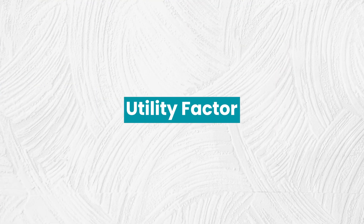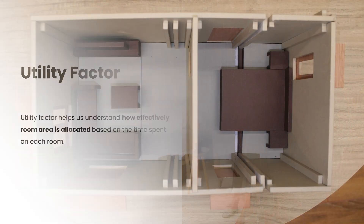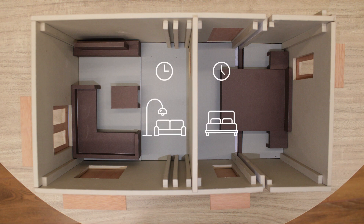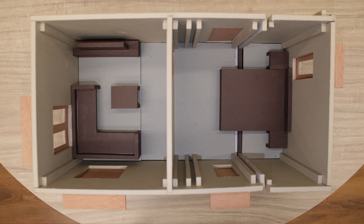The next factor used is called the utility factor, which is used to understand how effectively an area is allocated based on the time spent in each room. For example, consider a scenario where one wishes to spend more time in the bedroom than in the living room. While designing, if more area is allocated for the living room than for bedrooms, it reduces the impact of space as you will feel more enclosed as you spend more time in the bedroom. In this case, the utility factor is less, and this factor can be increased by allocating space based on the time spent.